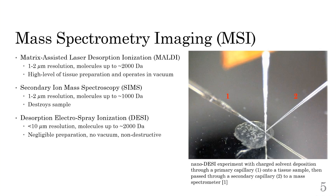SIMS doesn't have these limitations, but it does use a beam of ions to sputter the surface of the sample, which effectively destroys it. In contrast, DESI deposits a charged solvent through a capillary onto the sample and then draws the liquid back into the spectrometer. Recent work done at Purdue allows for spatial resolutions better than 10 micrometers, still with negligible levels of required sample preparation, and it also doesn't require operation within a vacuum. The nano DESI is also non-destructive, which means we can achieve multiple scans and higher tissue throughput in a laboratory setting.